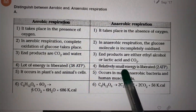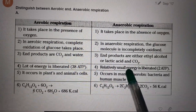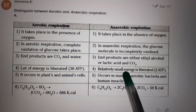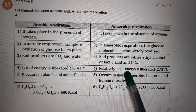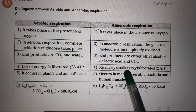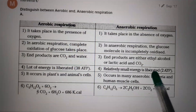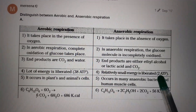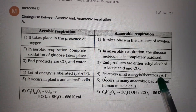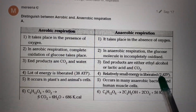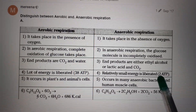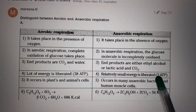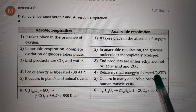Relatively, in the anaerobic respiration process, only a small, little amount of energy is liberated — approximately 2 ATP molecules — because of the incomplete oxidation of the glucose molecule.